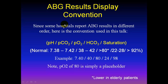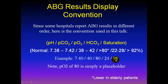I mentioned in the first talk, but it's worth mentioning again, that I'll be showing you the acid-base problems without any labels: 7.40, 40, 80, 24, 98. Our convention is pH first, pCO2 next, pO2 third, calculated bicarbonate fourth, and saturation 98. We're not going to go over O2 exchange, but I'm using pO2 of 80 and saturation of 98 as placeholders, just so this isn't a normal format.